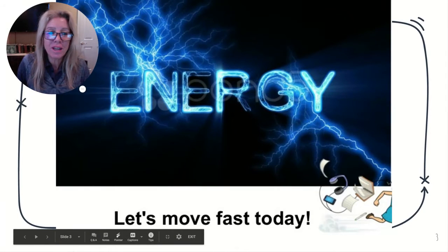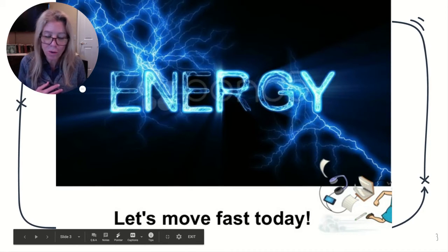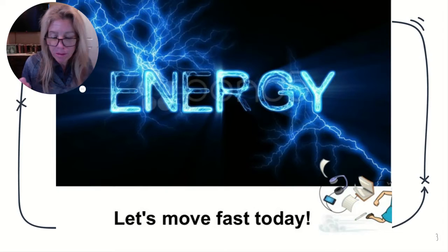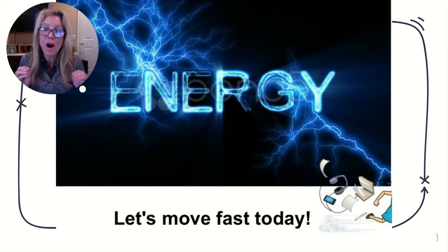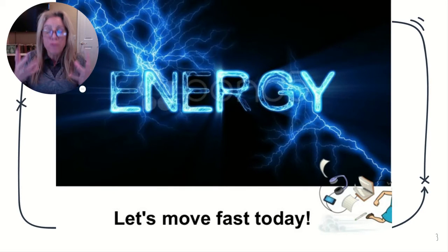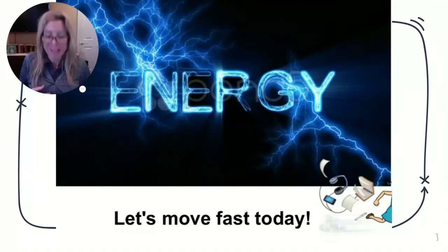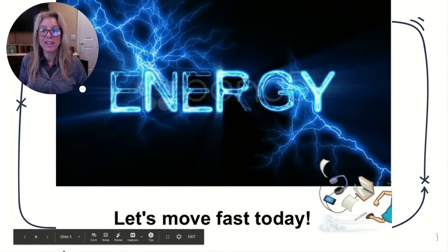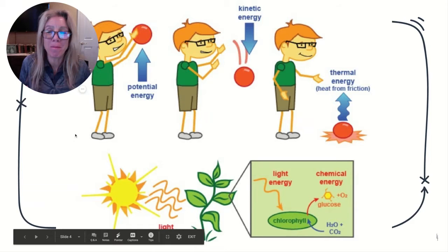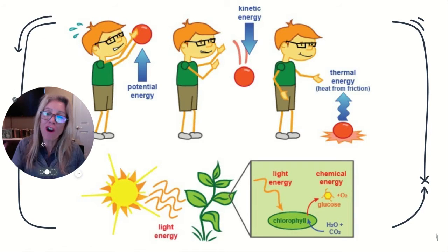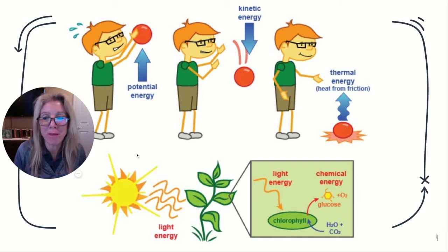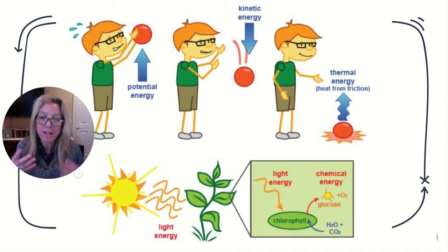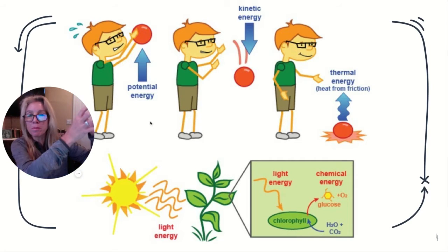The first thing you need to know: energy is the ability to do work or bring about change. More specifically, free energy is the type of energy that can do work. All energy is ultimately dependent upon the sun, and we harvest it in different ways. For example, a little boy holding up a ball has potential energy, because gravity can act on that ball.